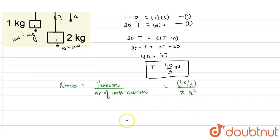Now if the wire doesn't break, this stress generated will be less than or equal to the breaking stress. So it will be: (40/3)/(πr²) ≤ σ_b.